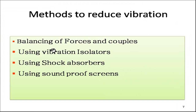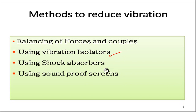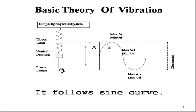Methods to reduce vibration include: first, balancing the forces and couples acting on the system so there are no vibrations; second, using vibration isolators to isolate the main system from the source of vibration; third, using shock absorbers to absorb shocks before they are transferred to the system; and fourth, using soundproof screens to reduce vibrations.